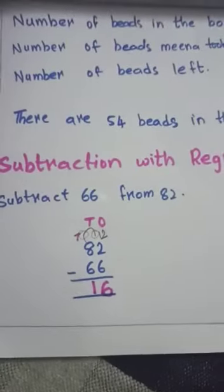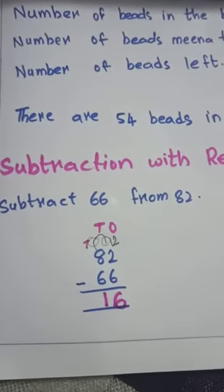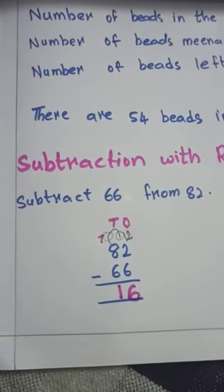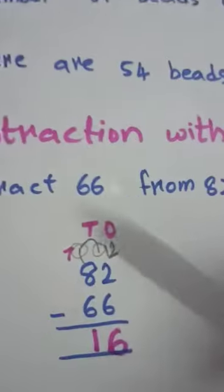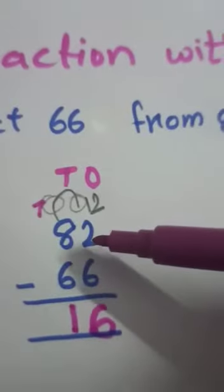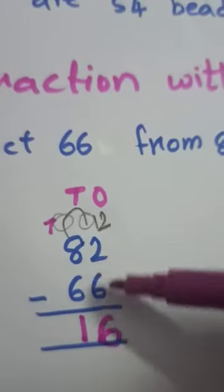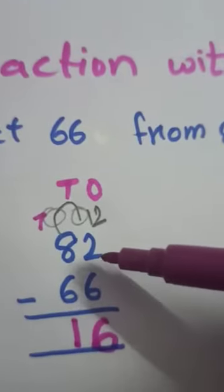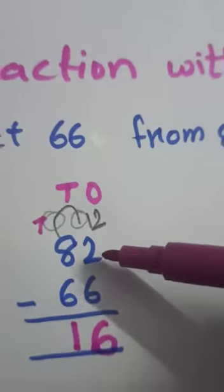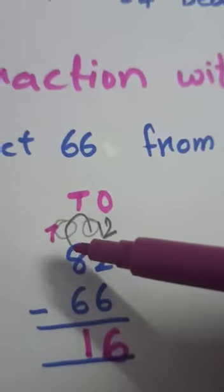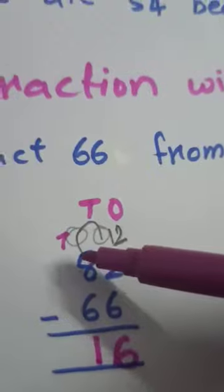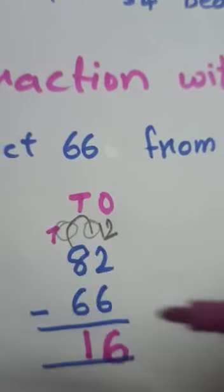This subtraction with regrouping is also called subtraction with borrowing. Sometimes, on the same place, we have not enough 1s. So, we will take one 10 from 10th place.